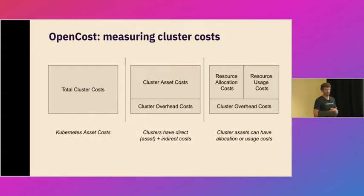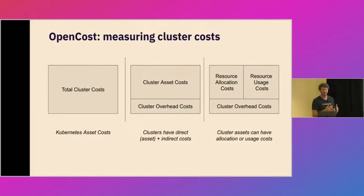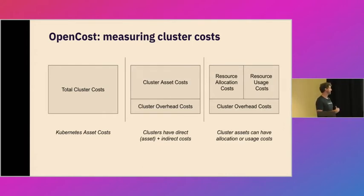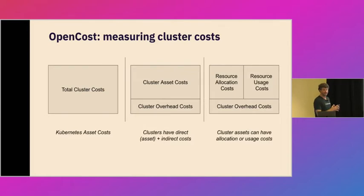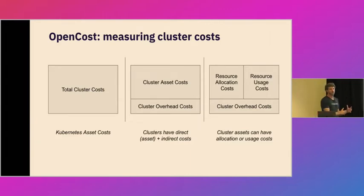This all starts with just thinking about the total cluster costs for your Kubernetes environment — everything that's observable from compute to network to storage. This can be broken down into individual asset costs or direct costs, as well as overhead costs. You can think about these from a finance perspective as: asset costs are like cost of goods sold or variable costs, whereas overhead costs are more fixed on a per-cluster level. Asset costs can be further broken down into allocation-based costs and usage-based costs. Allocation costs are those that are actually provisioned or reserved based on capacity — it's less relevant if you're actually using them because you're getting billed for them one way or the other. Usage costs are just pay for what you use.